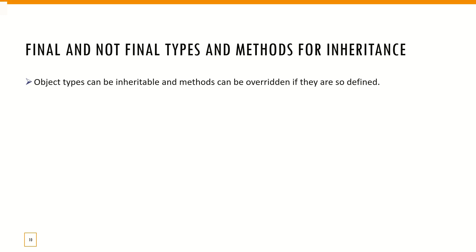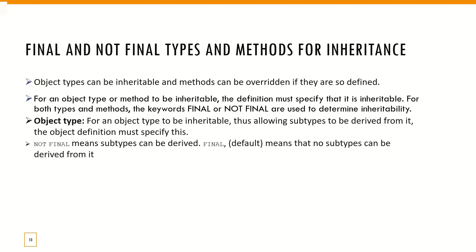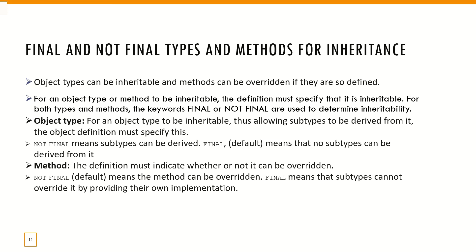Methods and types are inheritable, so we write them so they can be inherited in subclasses. In PL/SQL object types, 'final' and 'not final' determine whether a type or method is inheritable. If 'not final' is written, it means subtypes can be further derived. If 'final' or the default is used, no further subtypes can be derived from it. Similarly for methods: 'not final' means the method can be overridden, while 'final' means it cannot be overridden — it keeps only its own implementation.